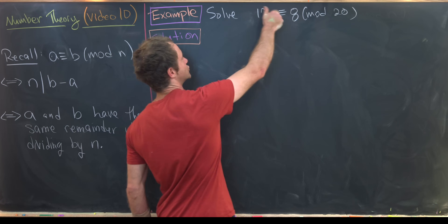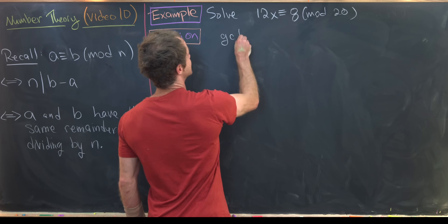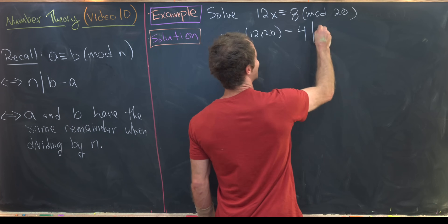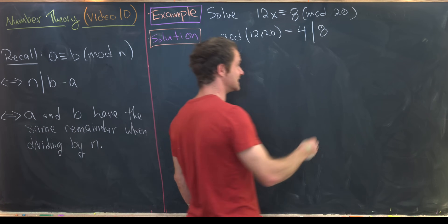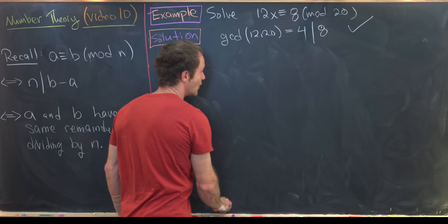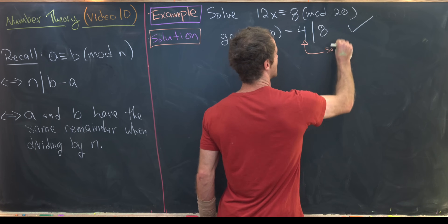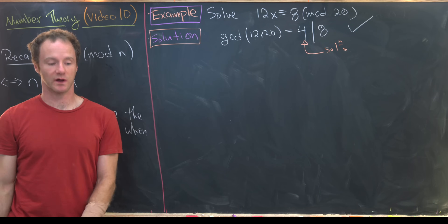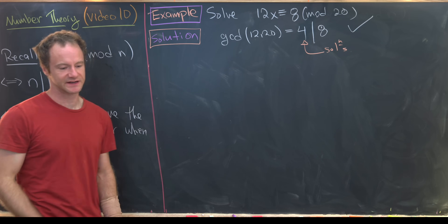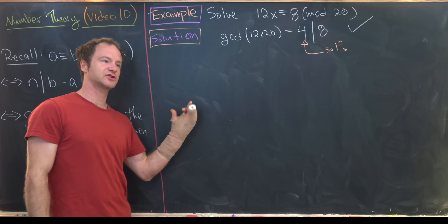For our first example, we solve 12x ≡ 8 mod 20. The gcd(12, 20) = 4, and 4 divides 8, so there is a solution. There are exactly 4 incongruent solutions modulo 20. These four solutions mod 20 can also generate all integer solutions.